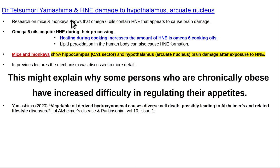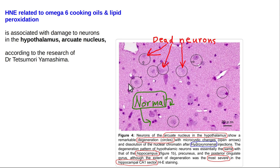Dr. Yamashima researched Japanese people, finding those most vulnerable were most sensitive to alcohol — those with Asian flushing syndrome lacking acetaldehyde dehydrogenase — but the HNE damage still occurs in mice and monkeys without enzyme deficiencies. Two problems arise: when HNE damages the hypothalamus it causes inability to regulate hunger; when it damages the hippocampus it leads to dementia. Slides from Yamashima's paper show neurons in the arcuate nucleus of the hypothalamus being destroyed by these toxic aldehydes via the calpain mechanism.